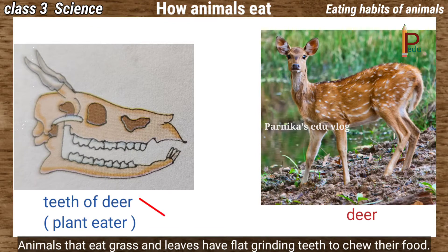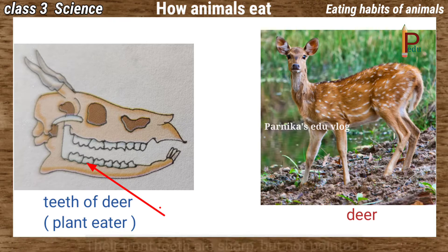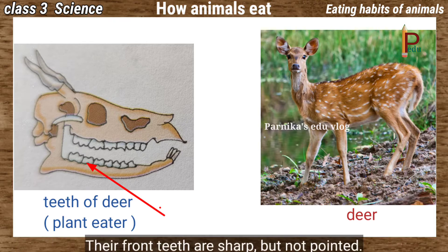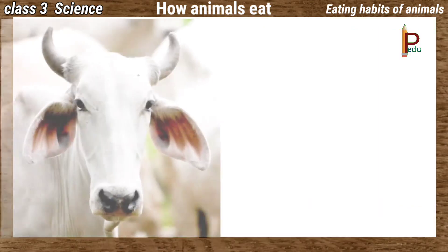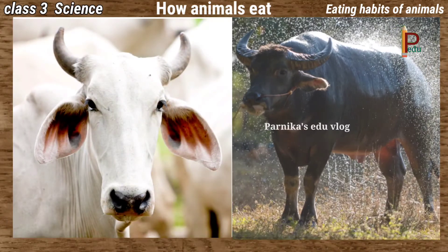Animals that eat grass and leaves have flat grinding teeth to chew their food. Their front teeth are sharp but not pointed.